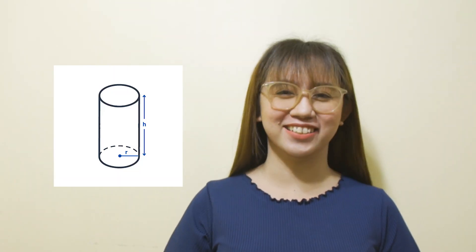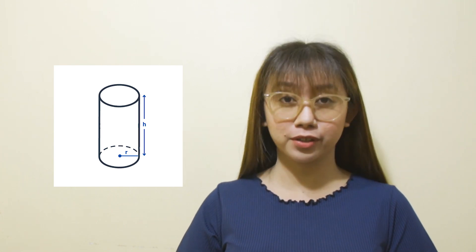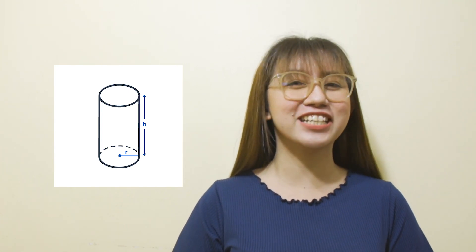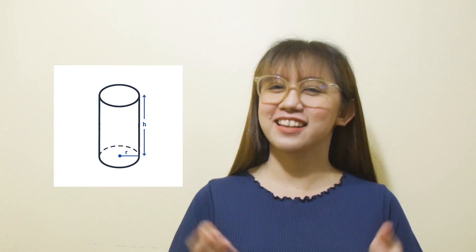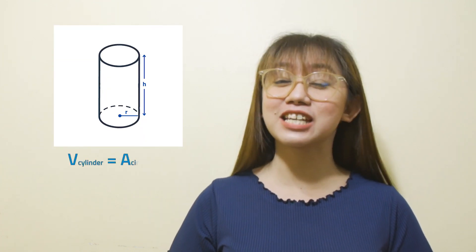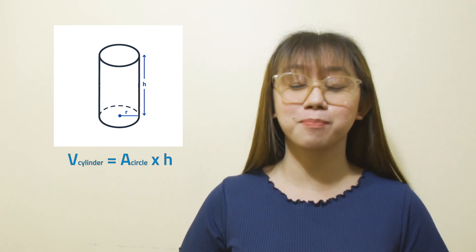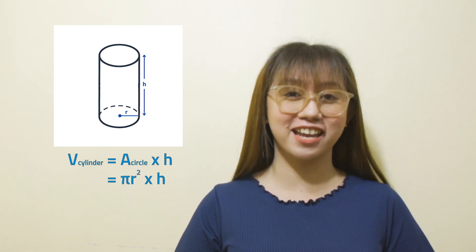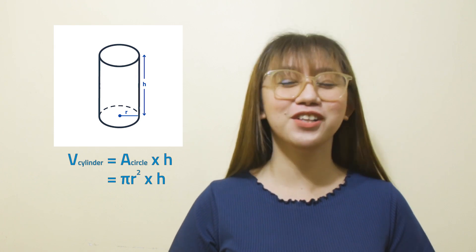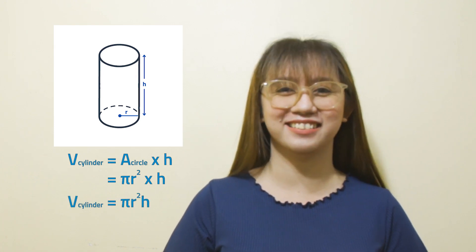Let's start by finding the volume of a cylinder. The volume of a cylinder is given by the product of the area of its circular base and its height. That is, volume of cylinder equals the area of the circle times height, which equals pi r squared times h. Thus, the volume of a cylinder is equal to pi r squared times height.